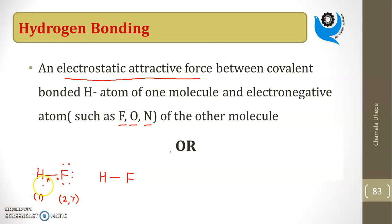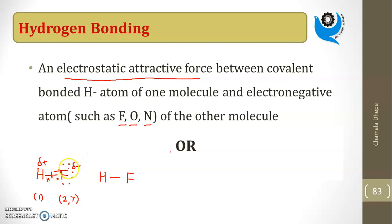Naturally, the shared pair should be at the center — equally shared — but fluorine is highly electronegative and small in size. Being highly electronegative, it attracts the electron pair more towards itself. So the sharing is not equal: fluorine acquires a fractional negative charge and hydrogen acquires a fractional positive charge, because fluorine pulls the shared pair more towards it.